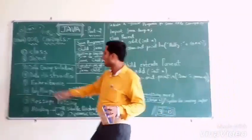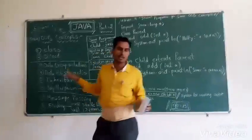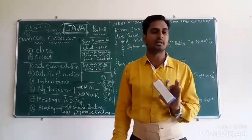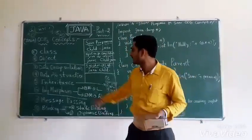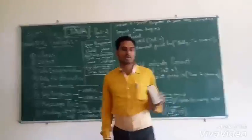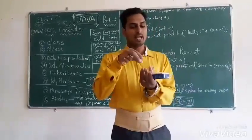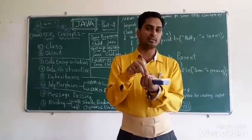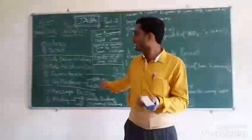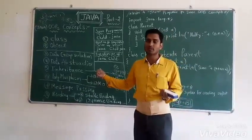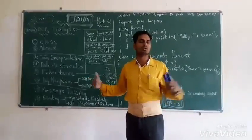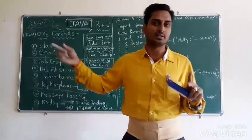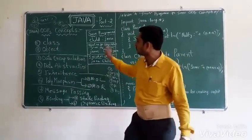The third OOPS concept is Data Encapsulation. Data means information — also keys typed on the keyboard are called data. Encapsulation in general English means capsule: binding medicine in a capsule to give security. Similarly, Java provides more security. It is robust — stronger than C, C++, .NET, and any other language. Security is provided through the class.